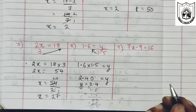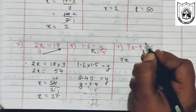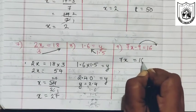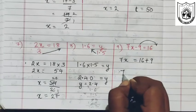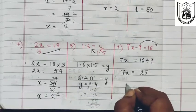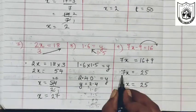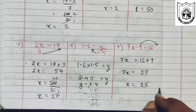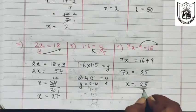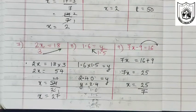Let us now solve the ninth problem. We transpose negative 9 to the right hand side, so we have 7x equals 16 plus 9, which is 25. Then we transpose 7 to the right hand side; multiplication becomes division. So x equals 25 upon 7, and since both numbers are not divisible further, we keep it as that.